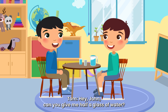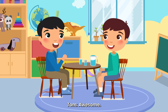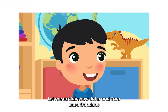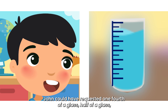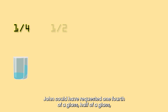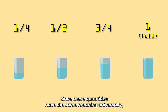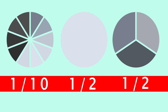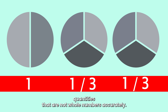Tom says: "Hey John, can you give me half a glass of water?" John replies: "Sure." Tom: "Awesome, thanks bro!" Based on his requirements, John could have requested 1 fourth of a glass, half a glass, 3 fourths of a glass, or a full glass of water. Since these quantities have the same meaning universally, there is no confusion and the request is fulfilled easily. That's why fractions are needed — to identify quantities that are not whole numbers accurately.